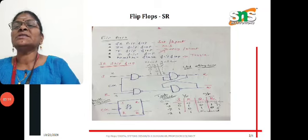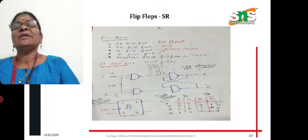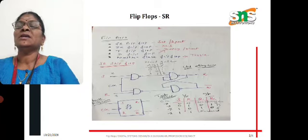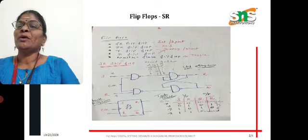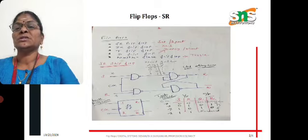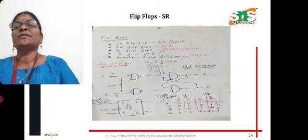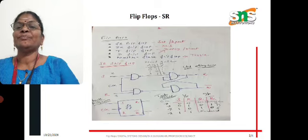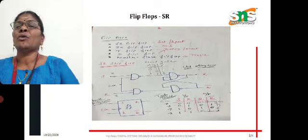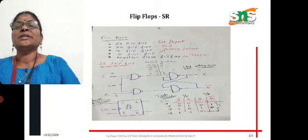Here is the block diagram of the SR flip-flop. The inputs are S and R, and a clock pulse is also given as an input. The outputs are Q and Q bar, which are always complementary to each other — if Q is 0 then Q bar is 1, and if Q is 1 then Q bar is 0. A common clock is given as an additional input alongside S and R, and the second half is a cross-coupled circuit.